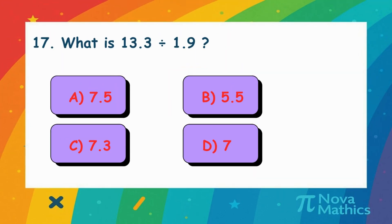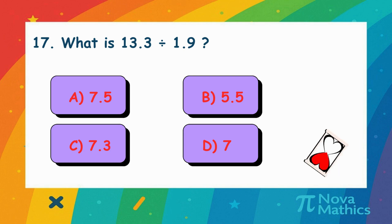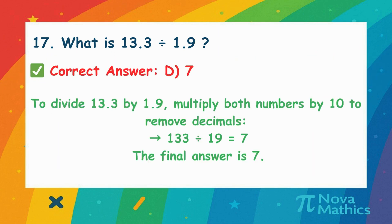16. What is 13.3 divided by 1.9? We want to divide 13.3 by 1.9. Multiply both by 10 to make them whole numbers. 133 divided by 19 equals 7.